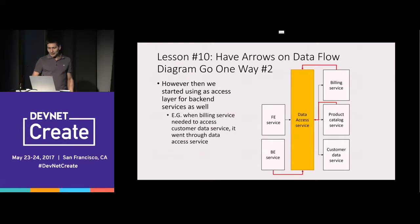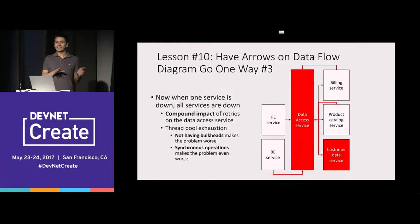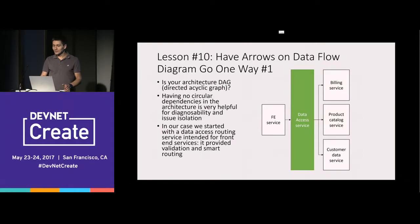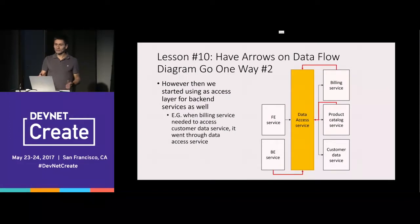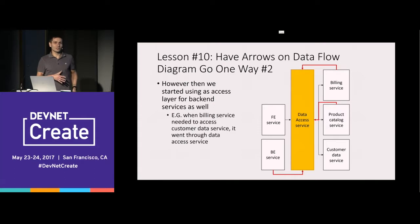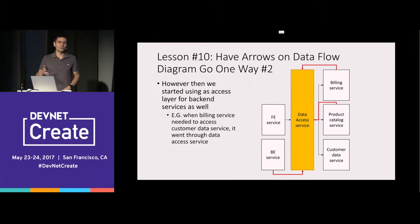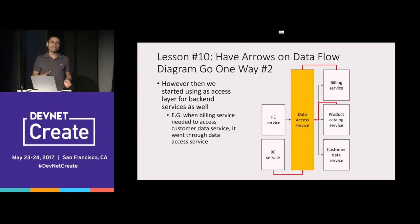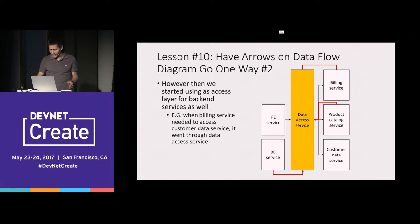On data flow clarity: if you draw your architecture, you want data flowing in one direction. What happens in complex products with multiple teams is that people add calls here and there in the spirit of agility, and suddenly errors start flowing the wrong direction. In a live-site situation, understanding which service has the root cause becomes nearly impossible — especially without bulkheads protecting service areas.